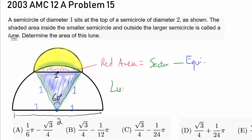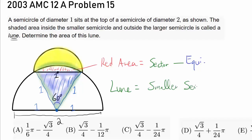The lune is going to be the area of the smaller semicircle, minus the red area, which we found using step 1. And we should be done. So let's try to find the red area.